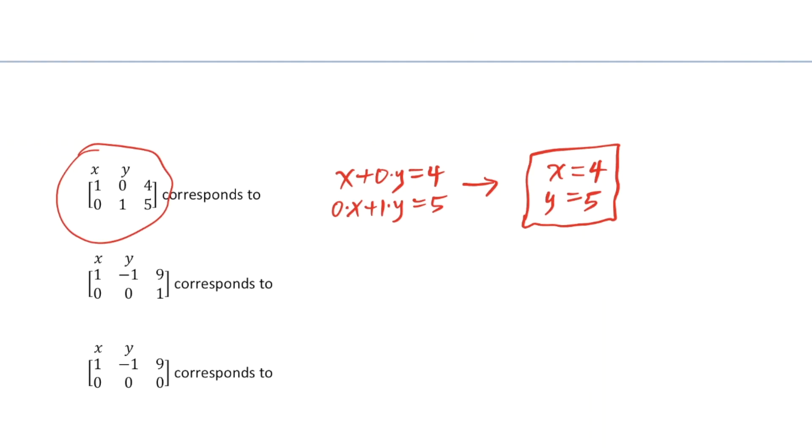Let's look at the next one here. We would have x plus negative 1y. Why don't we write x minus y is 9, and then we would have 0x plus 0y is equal to 1. And you could see that this would correspond to x minus y equals 9.